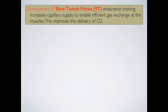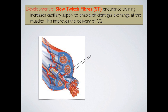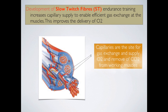Endurance training increases capillary supply to enable efficient gas exchange at the muscles, which improves the delivery of oxygen. Slow twitch fibres already have an increased capillary supply compared to fast twitch fibres. When we train specifically for aerobic activities — continuous training, fartlek training, aerobic interval training — we further improve this capillary supply. The capillaries are the site for gas exchange, so the oxygen delivery to the muscles becomes a lot more efficient, and the removal of CO2 is far more efficient as well.